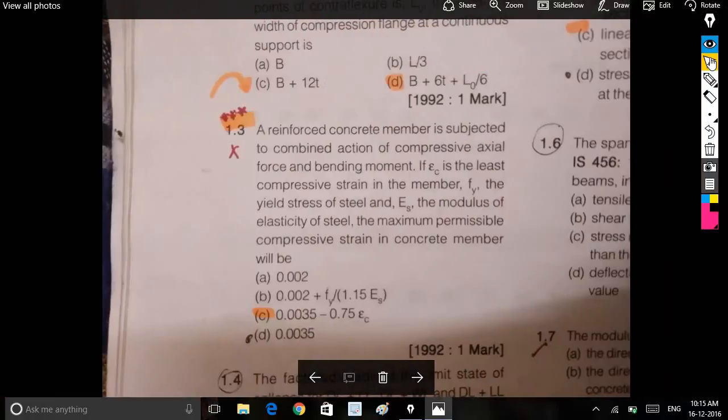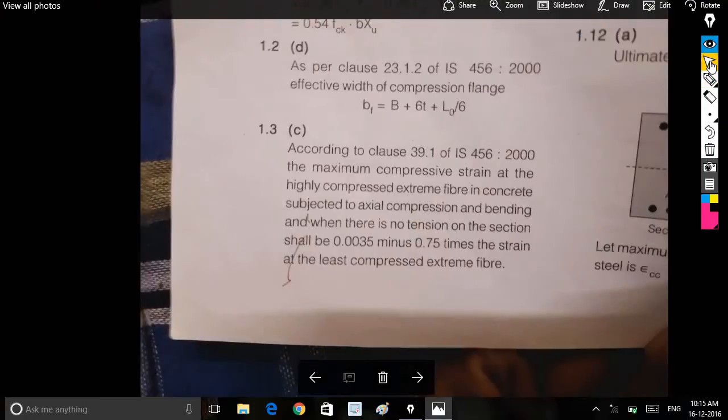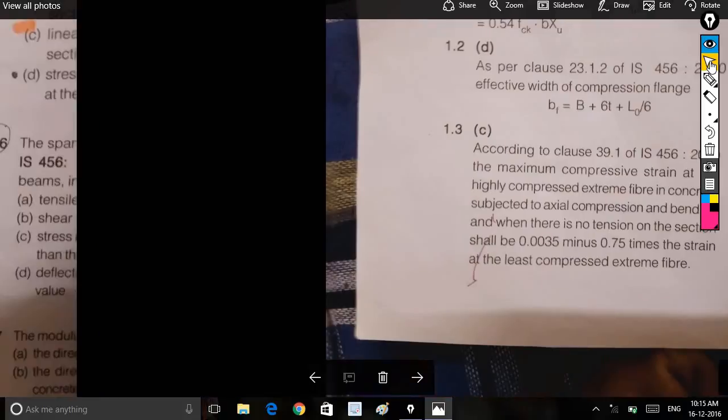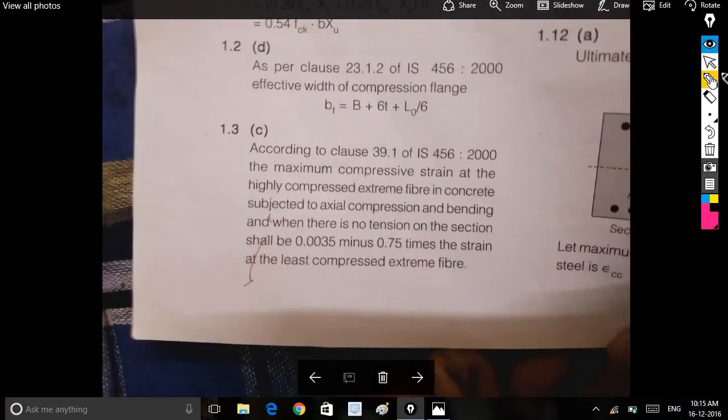In a reinforced concrete member subjected to combined action of compressive axial force and bending moment, where εc is the least compressive strain in the member, the maximum permissible compressive strain on the boundary. The maximum compressive strain is 0.0035 minus 0.75 times εc. This applies where there is no tension on the section.